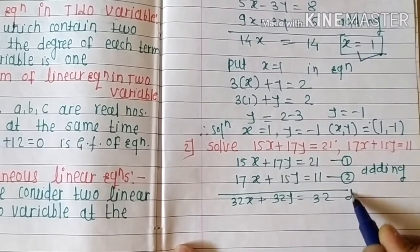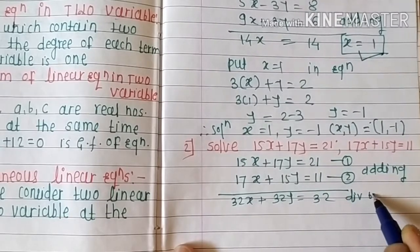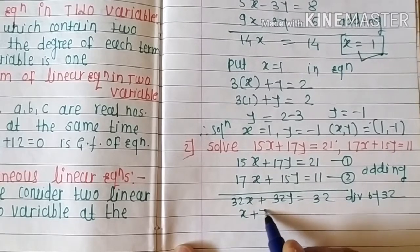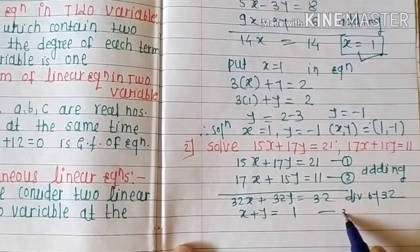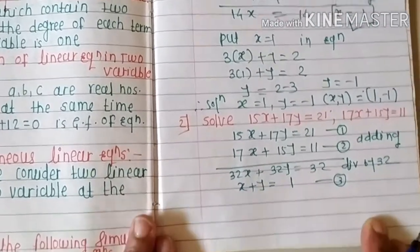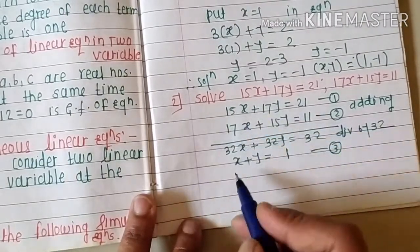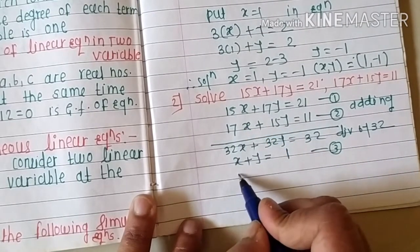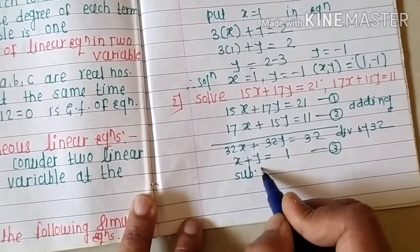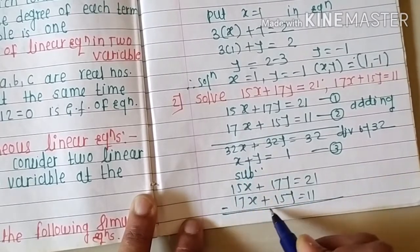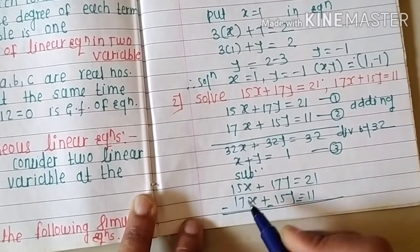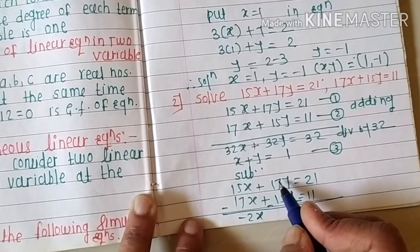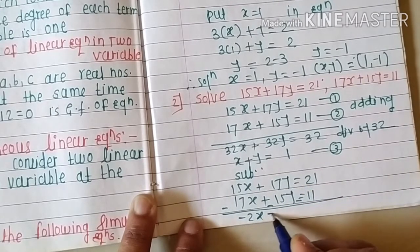Taking addition we get 32x plus 32y equals 32, which is divisible by 32. Dividing gives x plus y equals 1 — call this equation three. Then taking subtraction of the original two equations gives a second simplified equation.